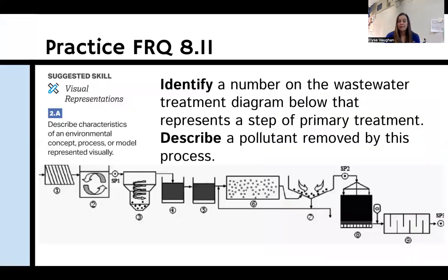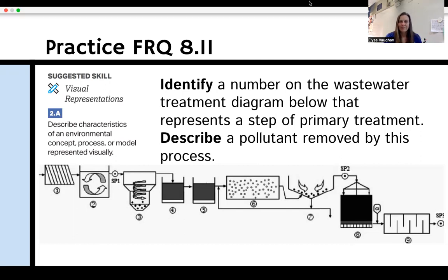Here's your practice FRQ for this objective: identify the number on the wastewater treatment diagram that represents a step of primary treatment, and describe a pollutant that is removed by that particular process. As always, I look forward to seeing you in class — let me know if you have any questions.